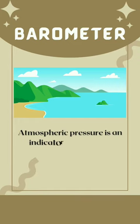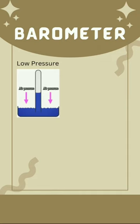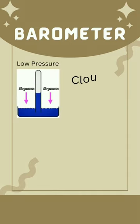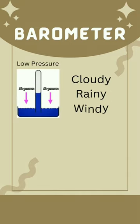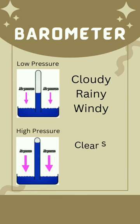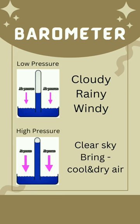Now, the best part is it is an indicator of weather. Low pressure indicates that it would be cloudy, rainy, or windy weather. Whereas, increase in atmospheric pressure indicates clearing of the sky, bringing in cool and dry air.